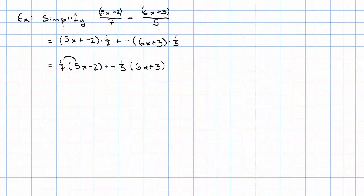Now I'm going to use the distributive property to get rid of my parentheses. I'll have 1 seventh times 5x is 5 sevenths x, plus 1 seventh times negative 2 is negative 2 sevenths, plus negative 1 fifth times 6x is negative 6 fifths x. Negative 1 fifth times positive 3 is negative 3 fifths.